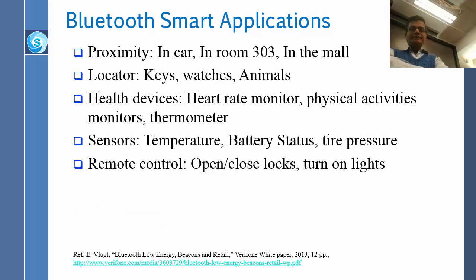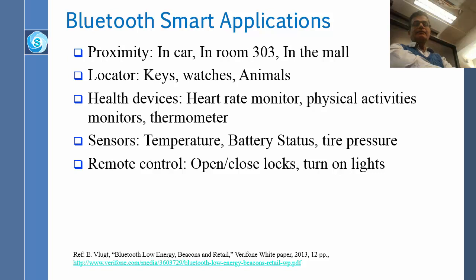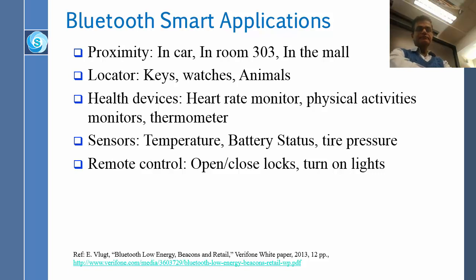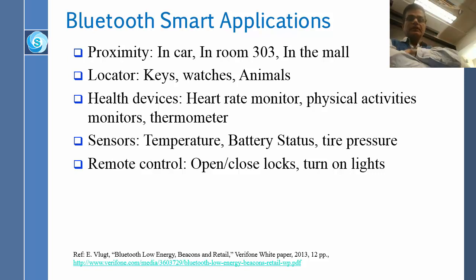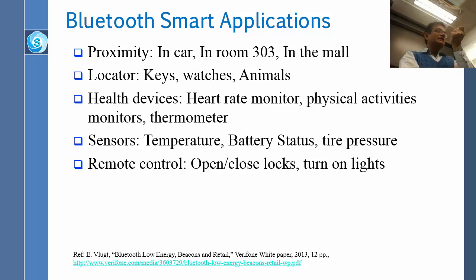What are the applications of BLE — Bluetooth Low Energy, or Bluetooth Smart? Its initial name was Bluetooth Low Energy, BLE, but then it became fashionable to call everything smart, so Bluetooth changed its name to Bluetooth Smart. You can use it for proximity — in the car, in the room, in the mall — to figure out where you are and how far you are from things. Locators can be used for keys, watches, and animals. They sell these little tags which can be used to locate objects.